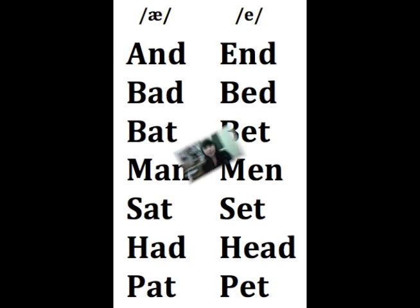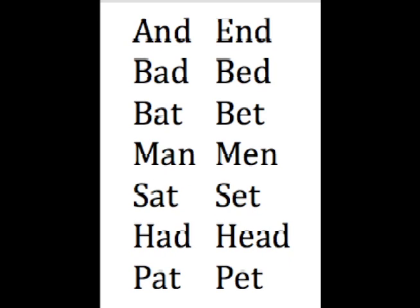So let's go back to the word list introduced at the beginning of the clip. By now, you should be able to pronounce them correctly. A — and — end. Bad — bed. Bat — bet.